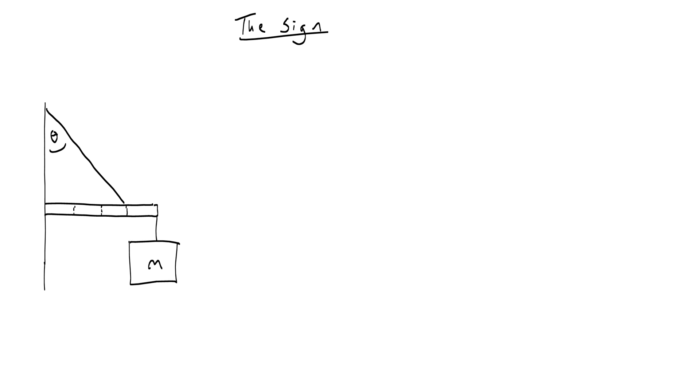Now the first thing for us to do is to recognize that this sign has a weight force down which we'll call mg, and it also has tension up in that rope which we'll call t, and those two forces are equal, t equals mg. The reason why that's important is because we know that that is the tension that's pulling down on the end of the rod. So we can say that that force is really just the weight of the sign.